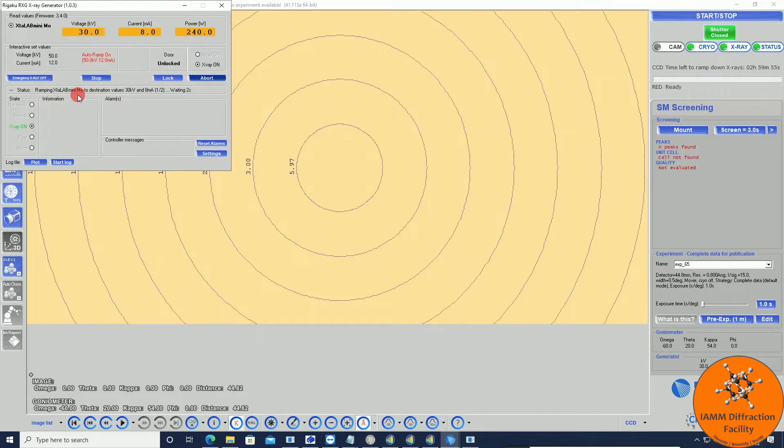Then we see here that it should start ramping up. Ideally, you want to do this before you start trying to mount your sample on the sample holder, that way it gives the system enough time to warm up and reach equilibrium. I'm not going to worry about that today because this is just a demonstration. I see now that it is 50 and 12, which is what we want, so I will close that.